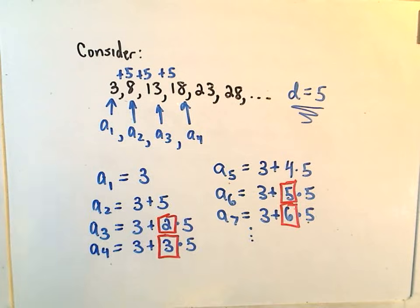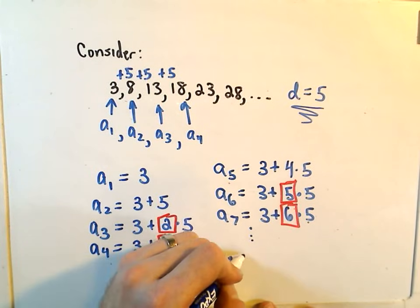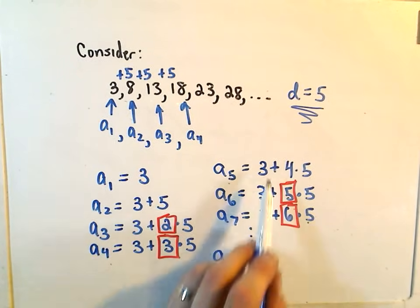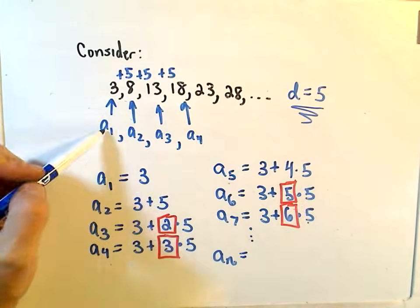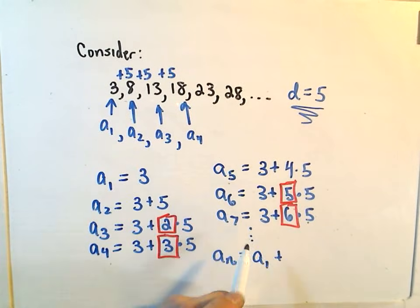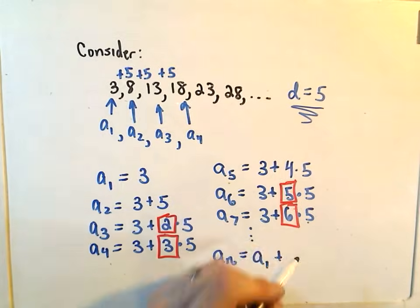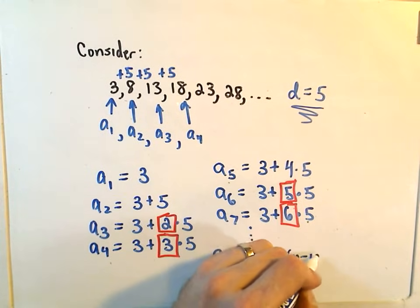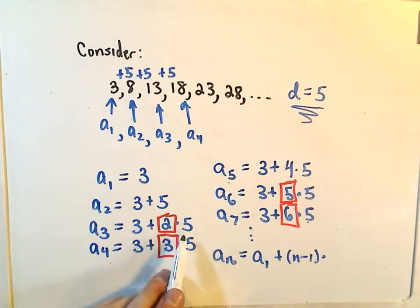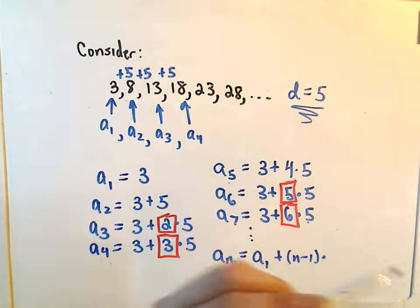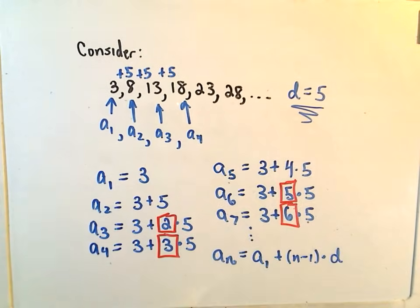So generically, it looks like if we have a_n, it looks like we're using the first term. Again, 3 is a_1. Whatever term we're at, we're using one fewer, so that would be n minus 1. And again, 5 in this particular sequence represents the d value. Okay, so that's kind of a way that you could justify the formula, or I think produce it real quick if you had forgotten.